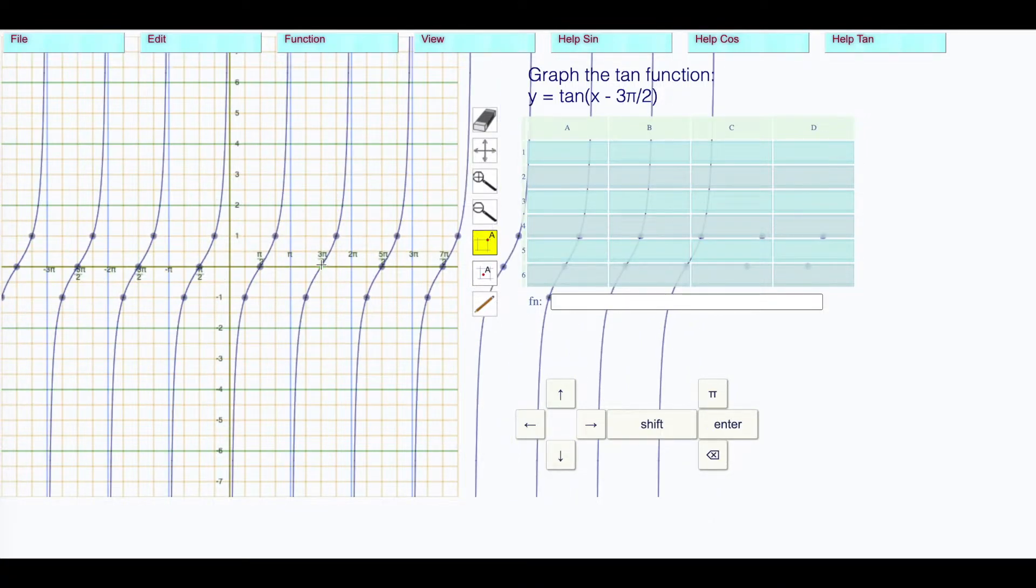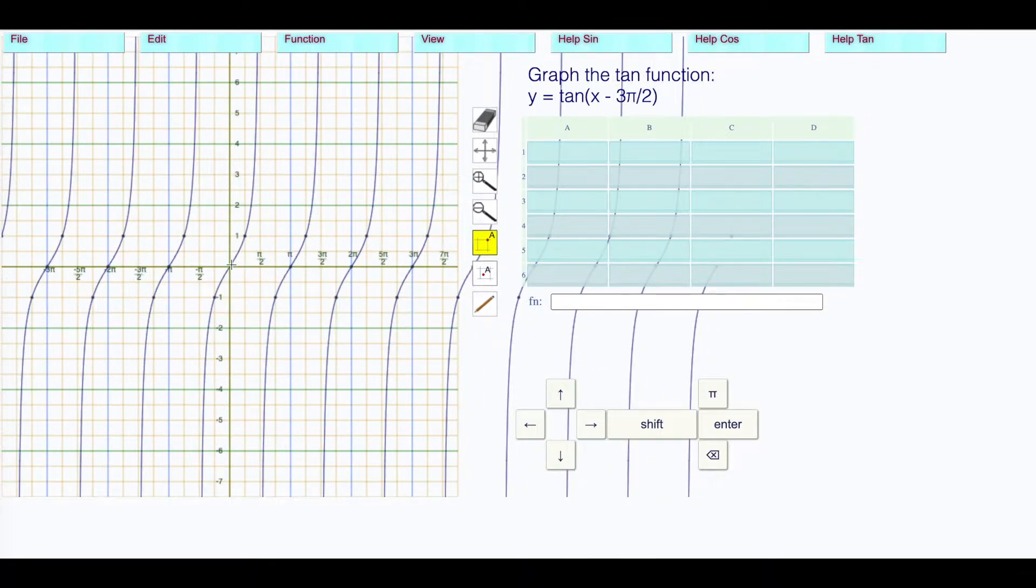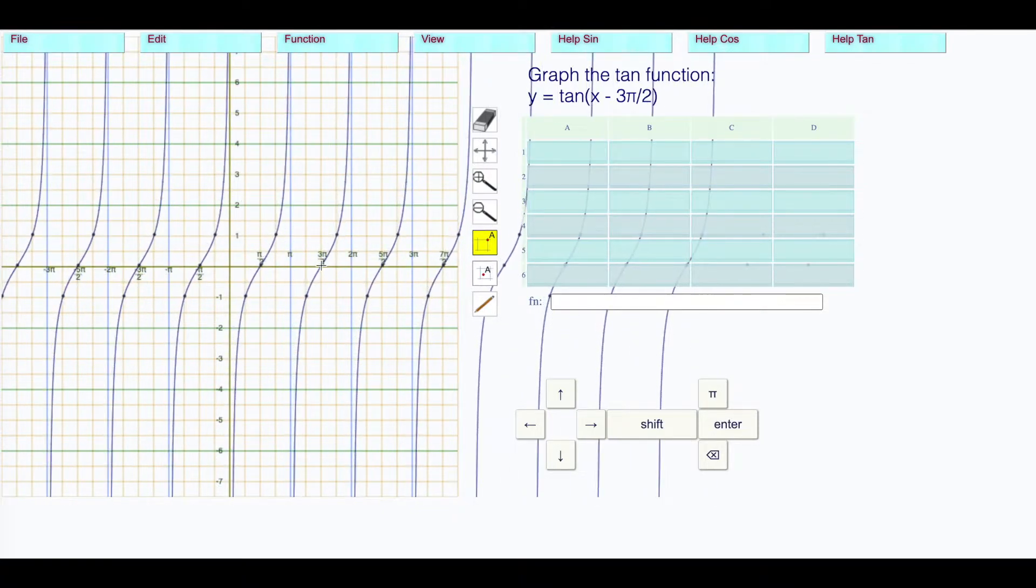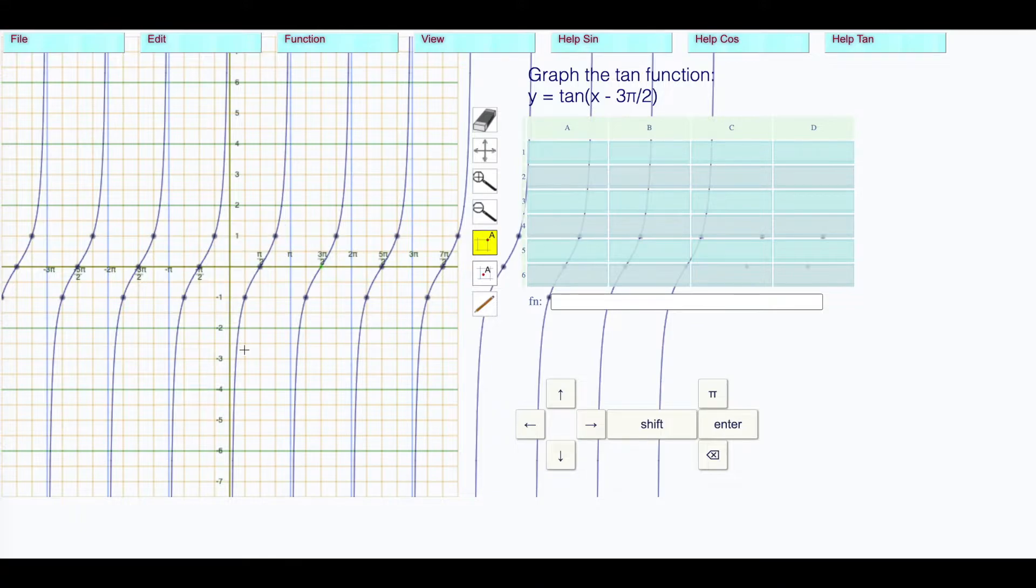Notice we could have gotten the same result by just moving over π/2. If we moved over π/2 it would look identical. Whether we moved over π/2 or 3π/2, we still have a graph going up through π/2 and 3π/2, and up through 5π/2. All of these look the same. This one I'm going to answer as requested.